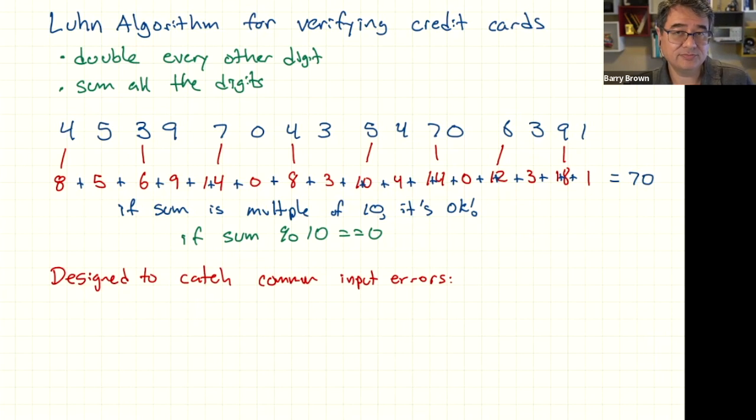So this is designed to catch common input errors. For example, like transposing two digits. If you type in a credit card number and you just switch this 3 and the 9, it would catch that. And the reason it would catch that is because now the 9 would get doubled and the 3 would not get doubled. And so when you added up the digits, the sum would not come out to be correct.